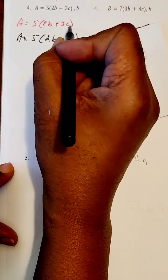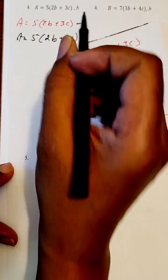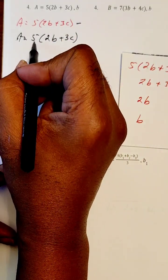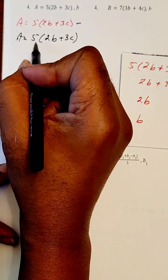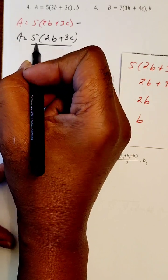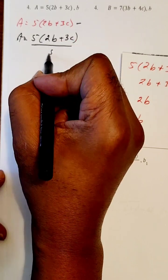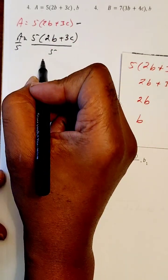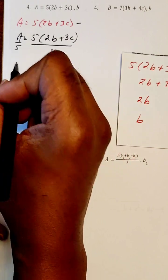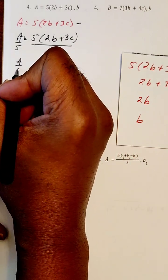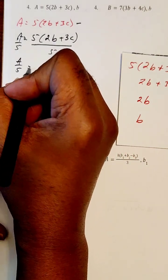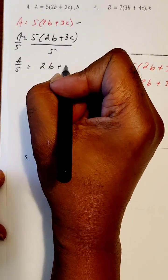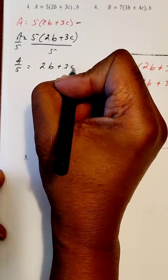Let's make it clear where we're starting from. We're going to get rid of the 5 first. This is a multiplying 5, so I'm going to use a dividing 5. What we do to one side, we do to the other. So we're doing the dividing 5 here, which now gives us A over 5, and this is going to equal 2B plus 3C.